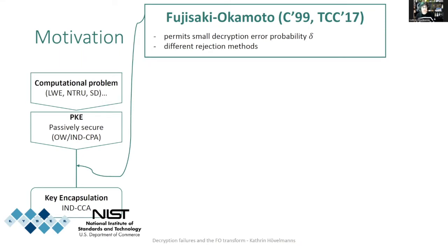Rejection methods are methods for how to deal with ciphertexts that do not look well-formed. One approach is to simply answer with a dedicated rejection symbol like bottom during encapsulation. The other approach is to hide that the ciphertext was not accepted by replying with a pseudorandom value.